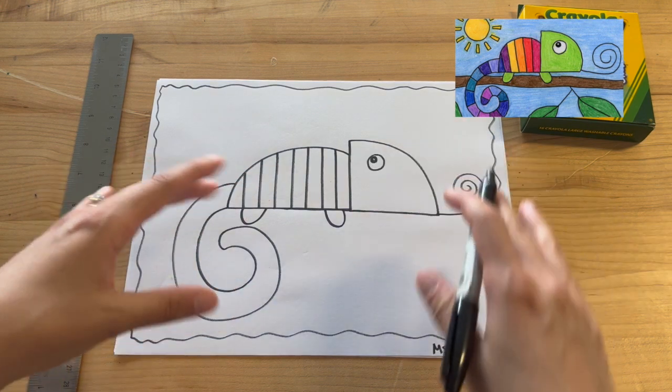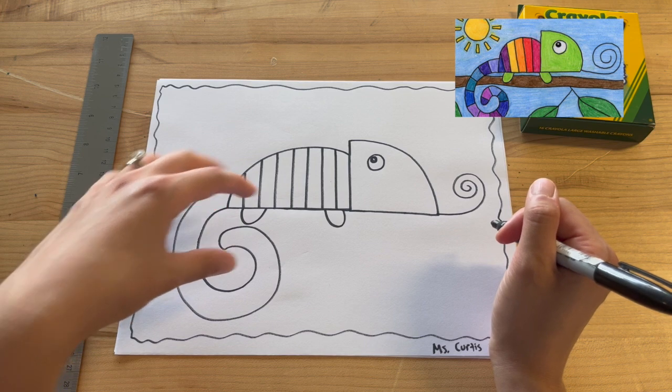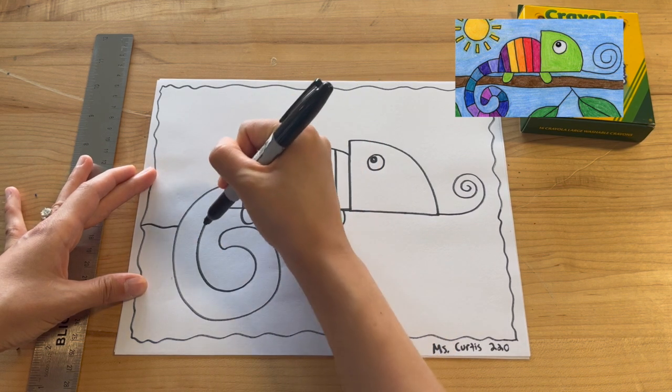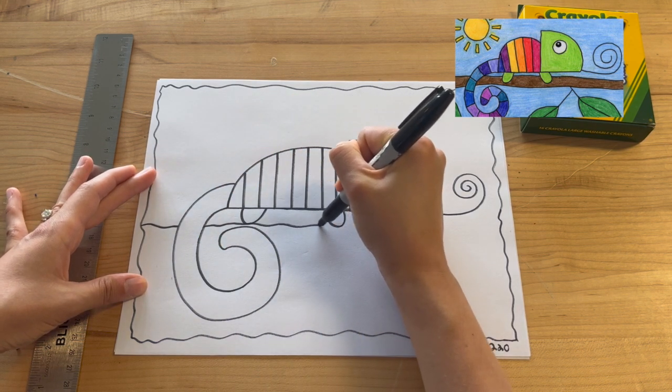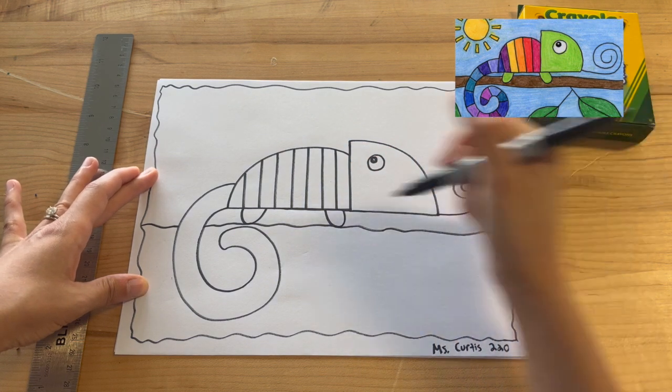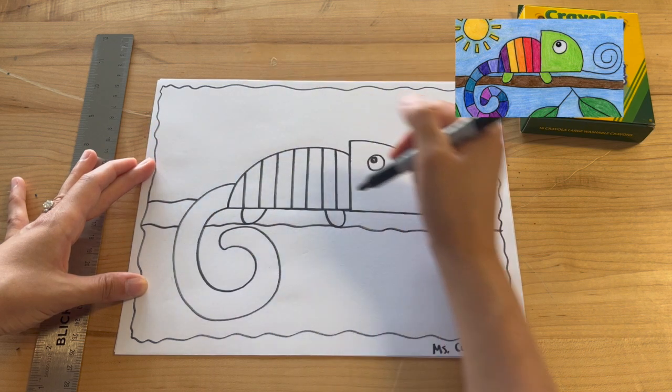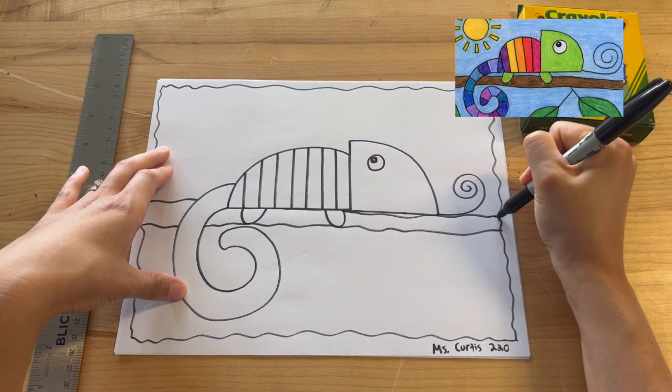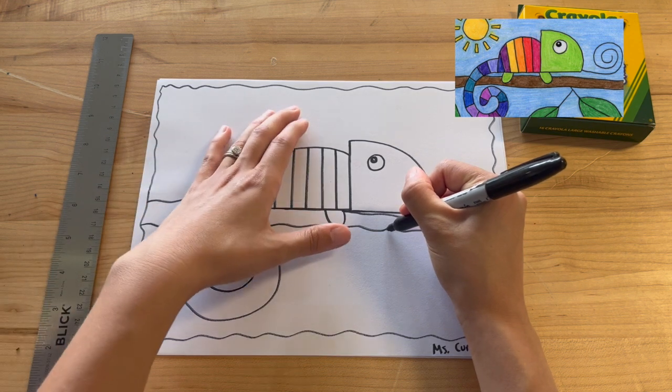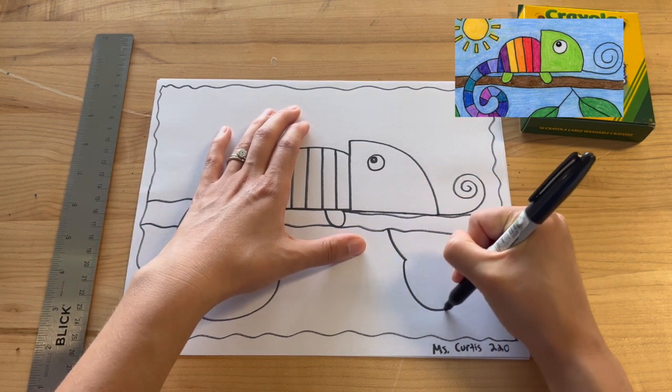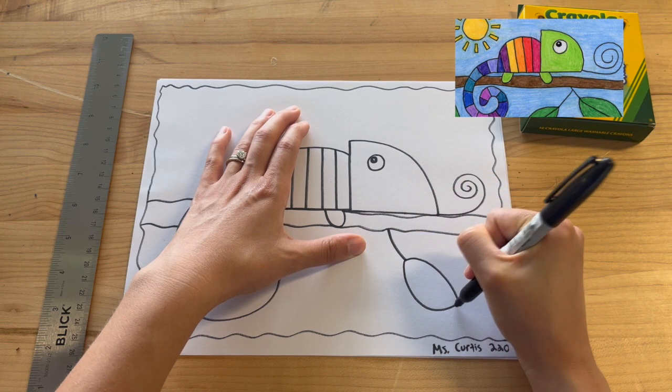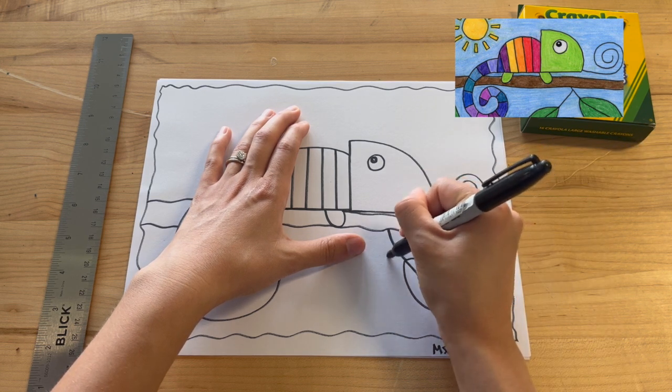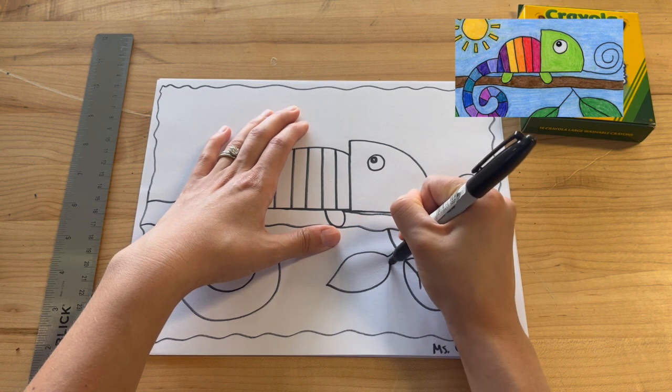And then we can start to add all the details of our background. So our lizard, we don't want him just, or her, floating in space. So we're going to just make a curvy line for a little branch that they'll be sitting on. And then I'm just going to make a line towards the top as well. It's going to stop right there. And then I'm going to have it come across over here. And we can add some leaves, so a line down here, and then a little curvy leaf petal. Some details. One over here. These are just like a little football shape.